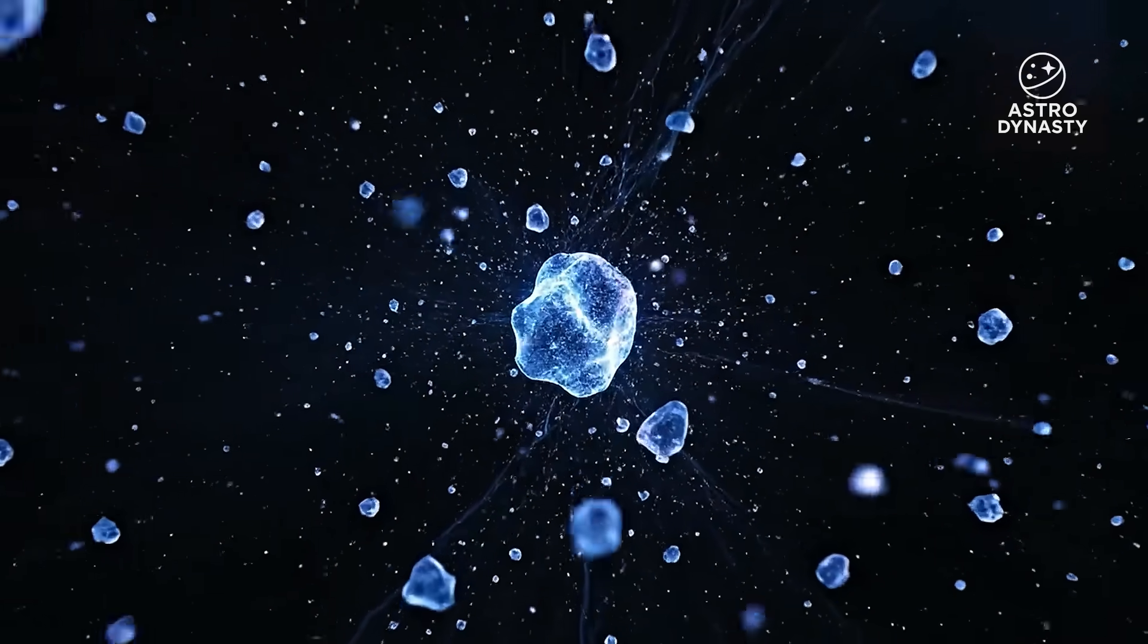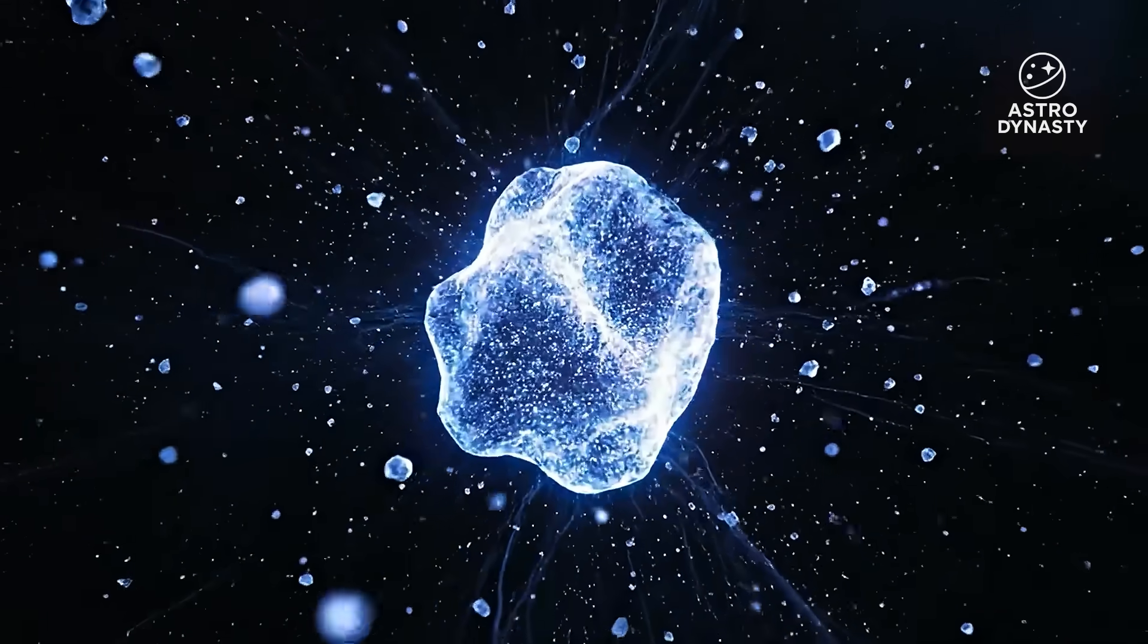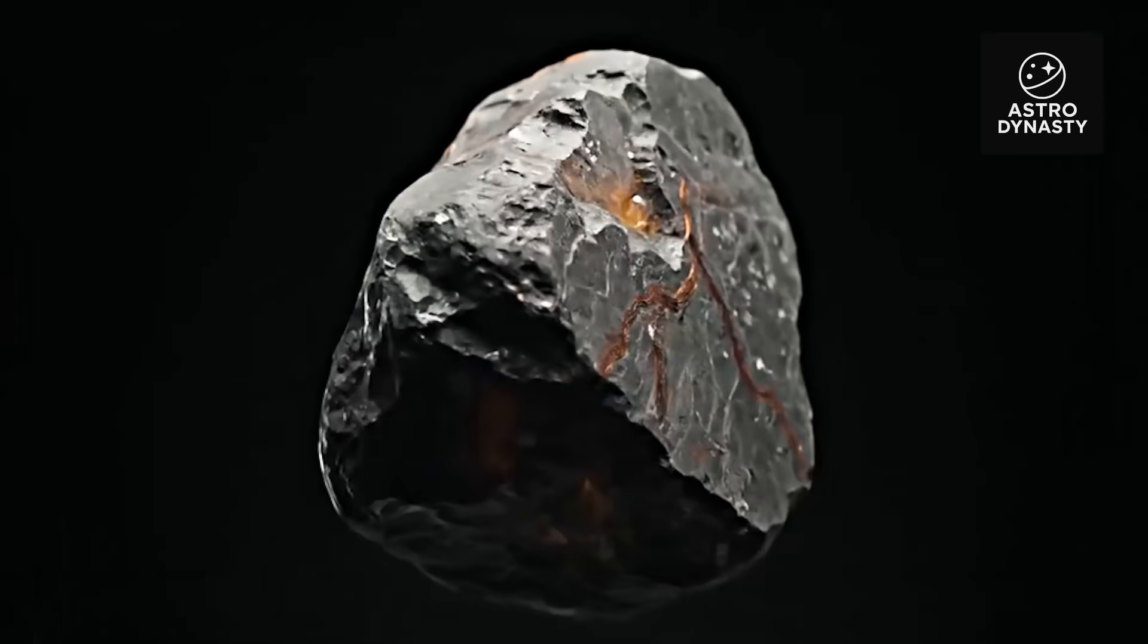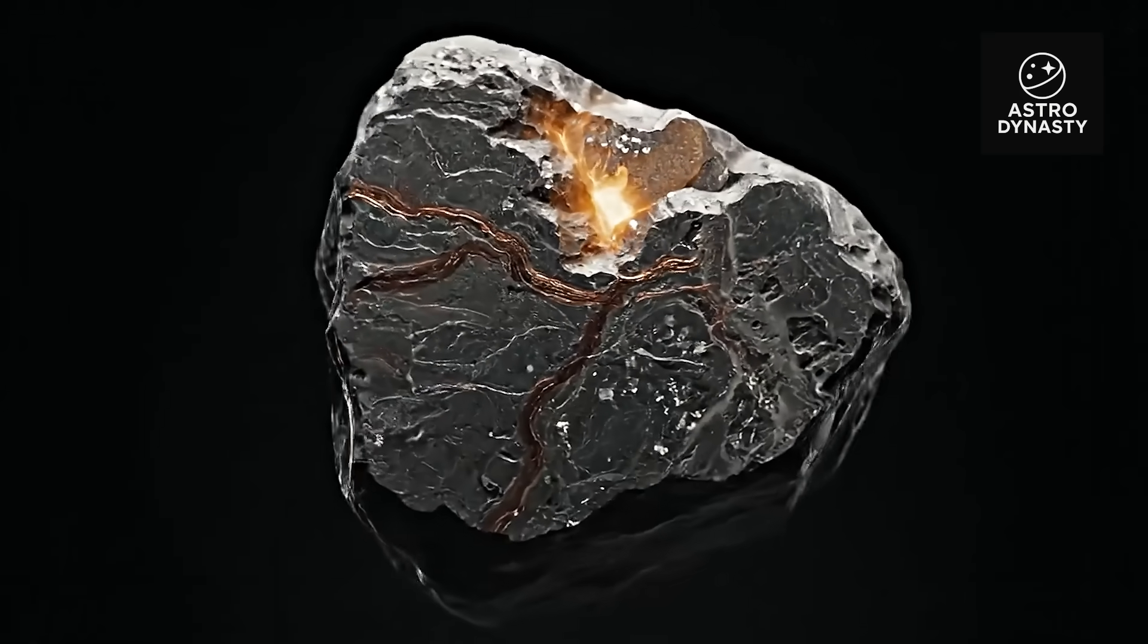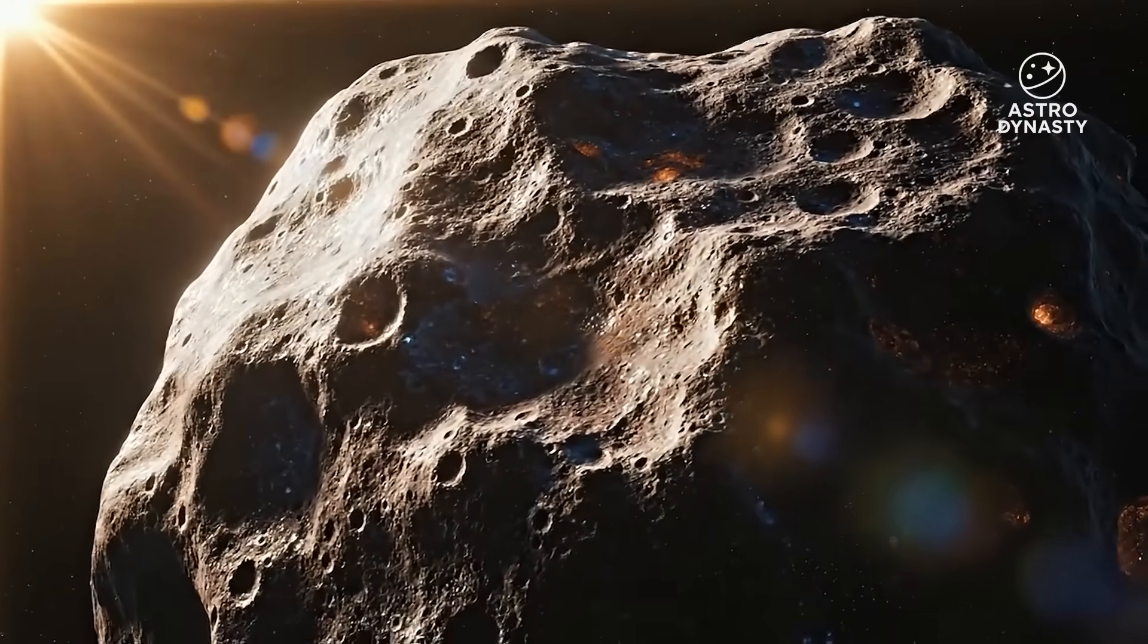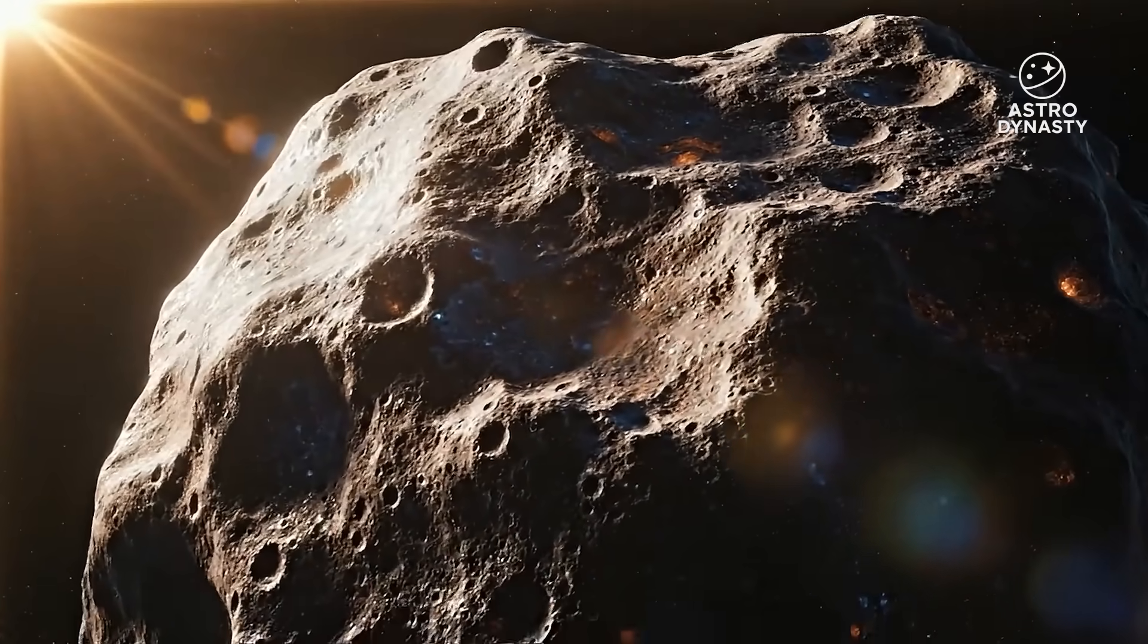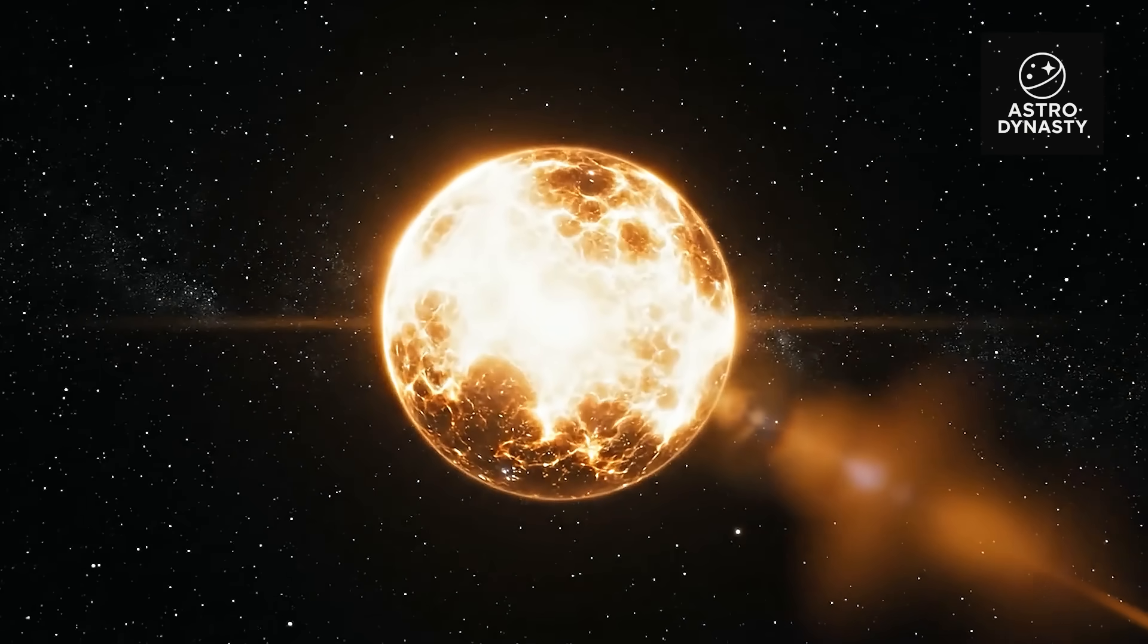After that, 3i Atlas was on a different path. Coincidence? Maybe. But if not, the implications are staggering, because it would mean something, somehow, changed its course. Every new simulation now puts Earth inside the potential intersection corridor - not at the bullseye, but close enough that the margins have vanished.